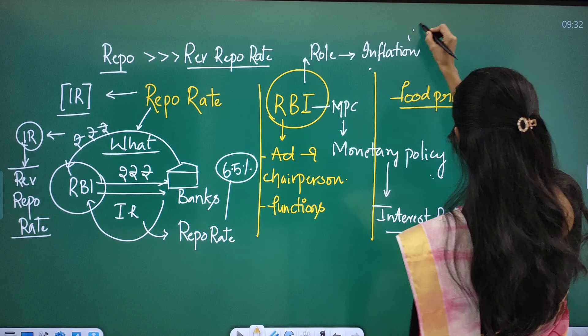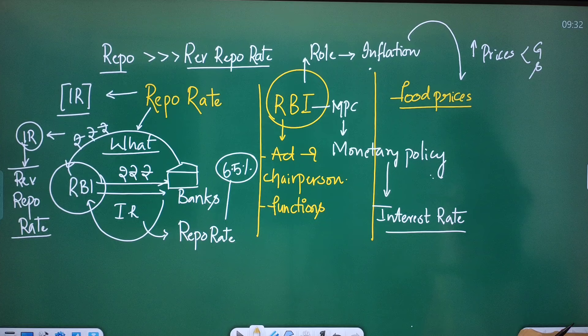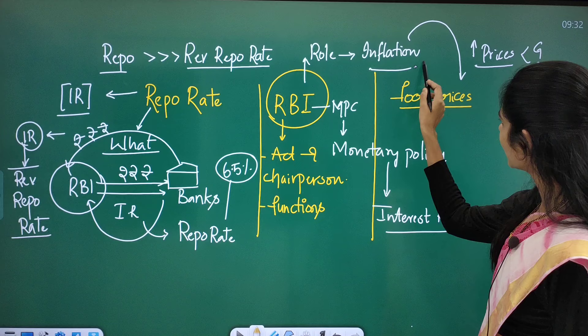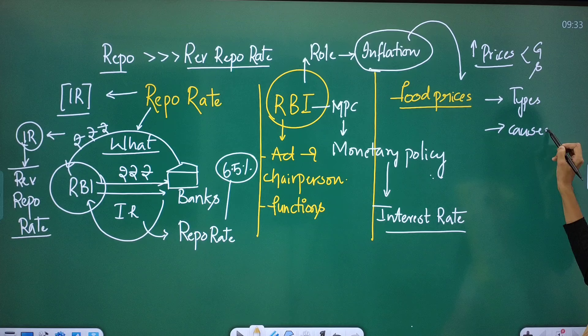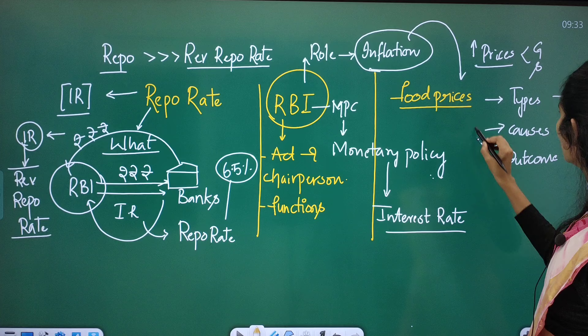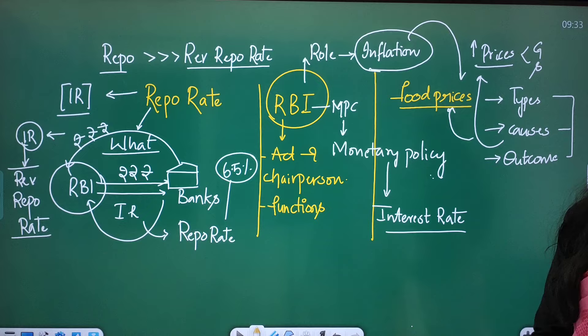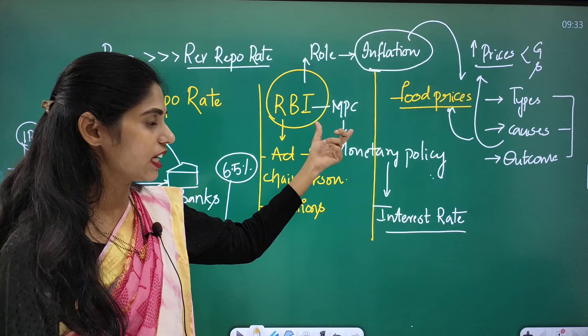Inflation is a condition where the prices of goods and services in the market are increasing. You have to see different types of inflation, the causes of inflation, and the outcomes of inflation. One important reason for inflation is the rising of food prices — such as vegetable prices or oil prices — which is a key component leading to inflation in the market.